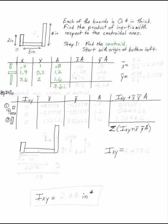That adds up to 3.6 inches squared. Multiply it out, 0.16, 2.28, 5.76 gives me a sum of 8.2. For the sum of the x bar a's, multiplying y bar times a gives me 0.8, 0.24, and 3.2. That's a sum of 4.24.